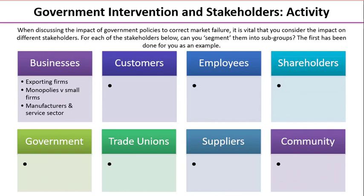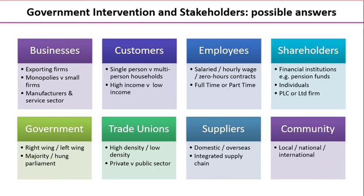Alternatively, you could think about manufacturers making tangible goods versus firms that operate in the service sector. Take a couple of minutes to pause the video and see if you can think about how you might segment each of those types of stakeholder into smaller subgroups. Then restart the video and take a look at some of our suggestions.